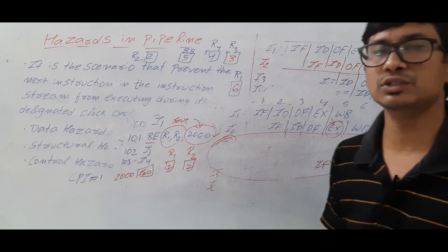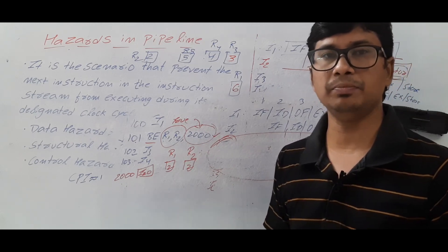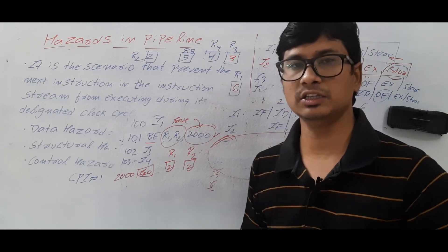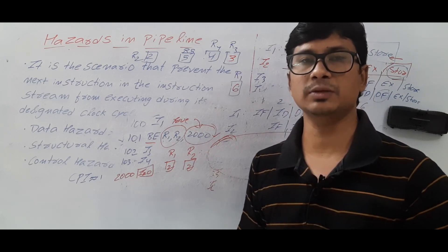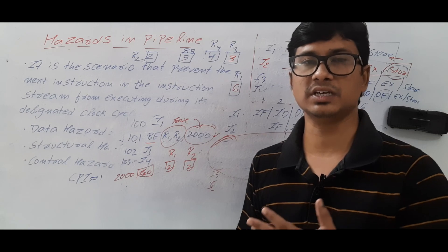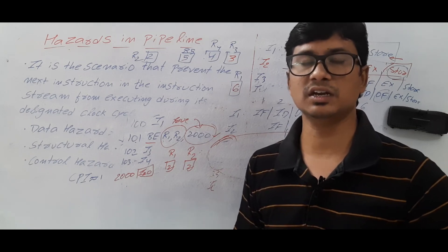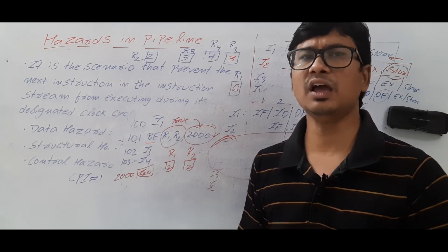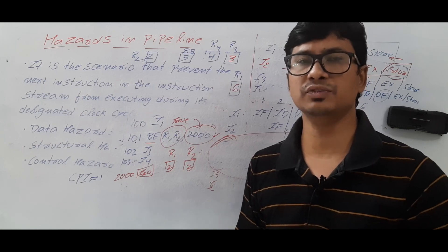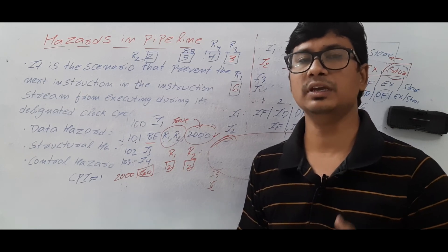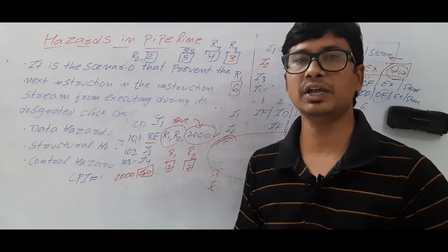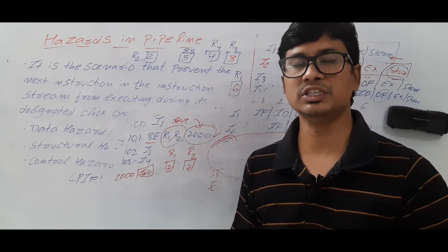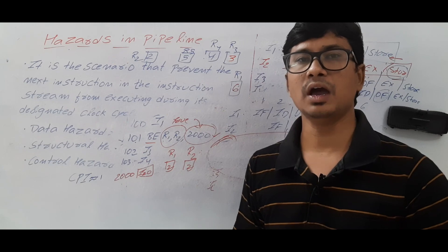I hope you have understood what a hazard is in a pipeline, what problem hazards cause, and the three types of hazards: data hazards, structural hazards, and control hazards. If you have any doubts, feel free to ask in the comment section. I will try to clear your doubts within 24 hours. Thank you for watching. Have a nice day.